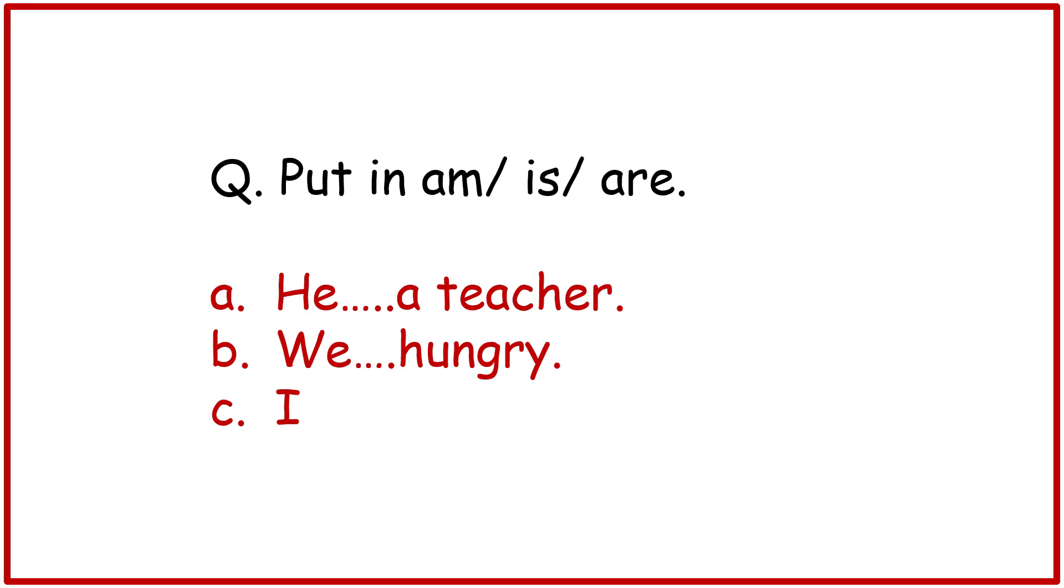Question. Put in am, is, are. A. He ___ a teacher. B. We ___ hungry. C. I ___ at school. Correct answers are: A. He is a teacher, B. We are hungry, C. I am at school.